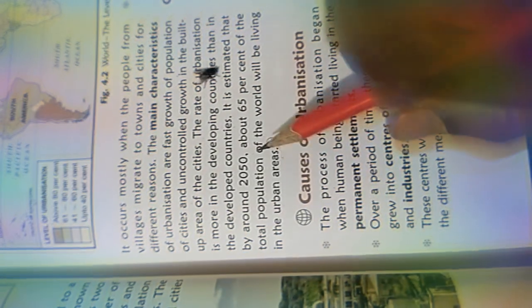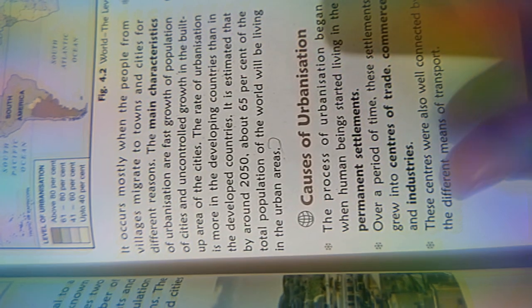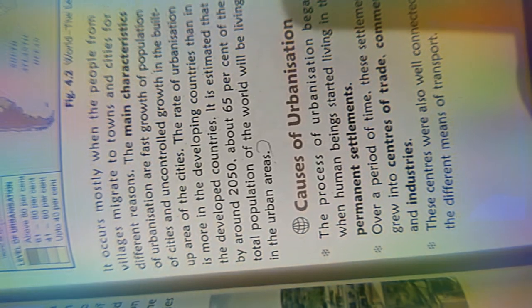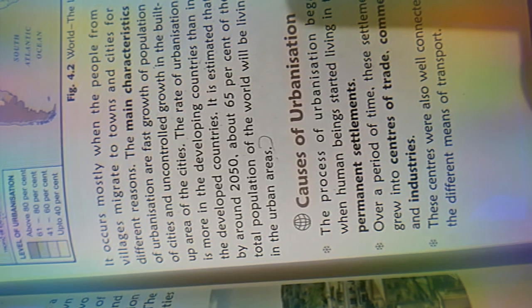Urbanization is linked with modernization and industrialization. Where there is more modernization, new technology is used, and people are attracted there. They shift from villages to towns and cities to benefit from the facilities available. Industrialization is more in cities so people find more work there — they work in factories under a roof, comfortably, rather than working in the fields in the sun. That is why they start working in industries.